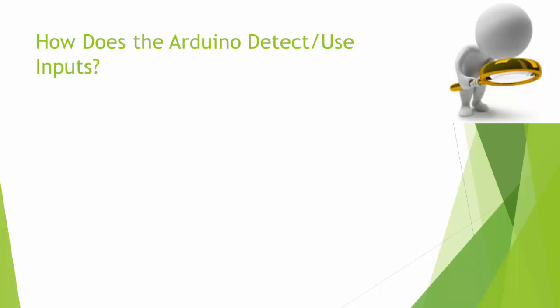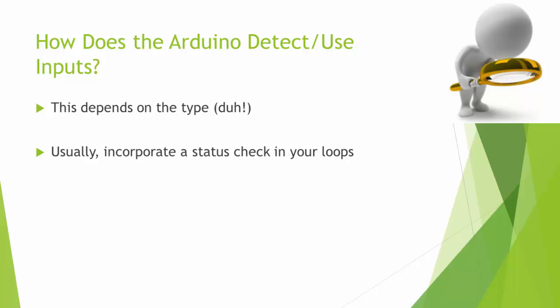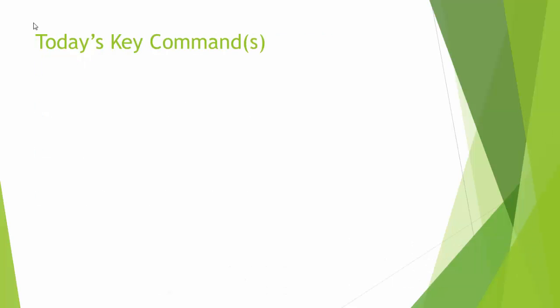So, how does the Arduino detect and use inputs? It depends on the type, of course. Usually, we put some kind of status check in our loops, like that while loop. Sometimes we'll have the Arduino just wait; sometimes it'll keep checking while it's doing other things. The implementation will determine the kind of code that we use.